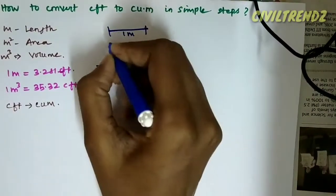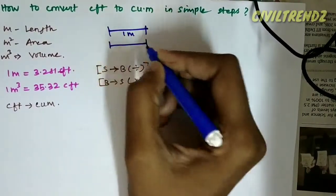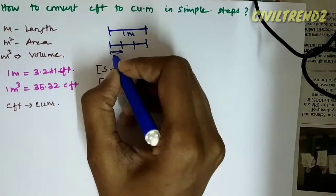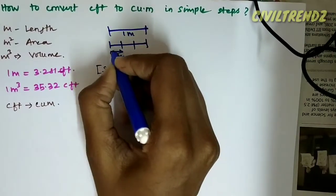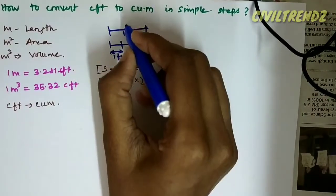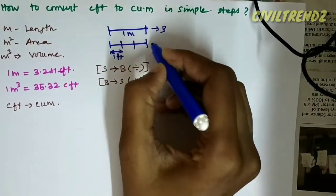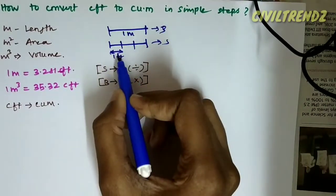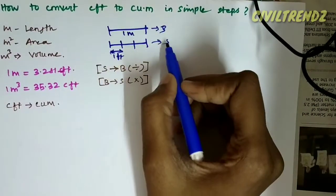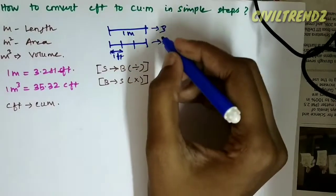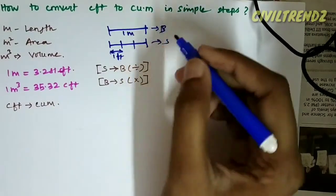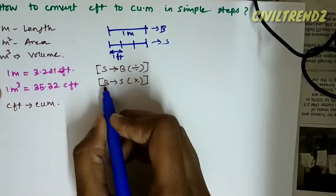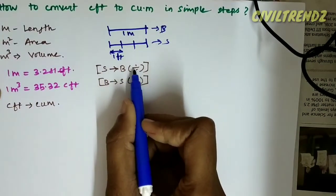Using 1 meter versus 1 feet — meter is the big dimension and feet is the small dimension. When we convert feet to meter, the small will become big. The big unit will convert to small, and the small will convert to big. To go from a smaller unit to a larger unit, we divide.